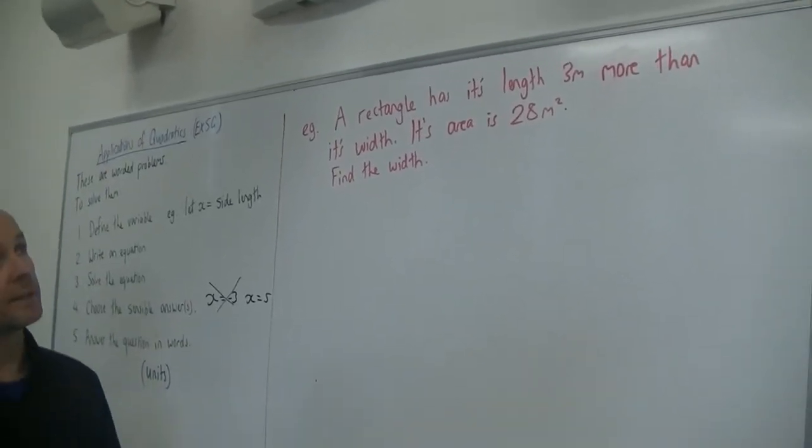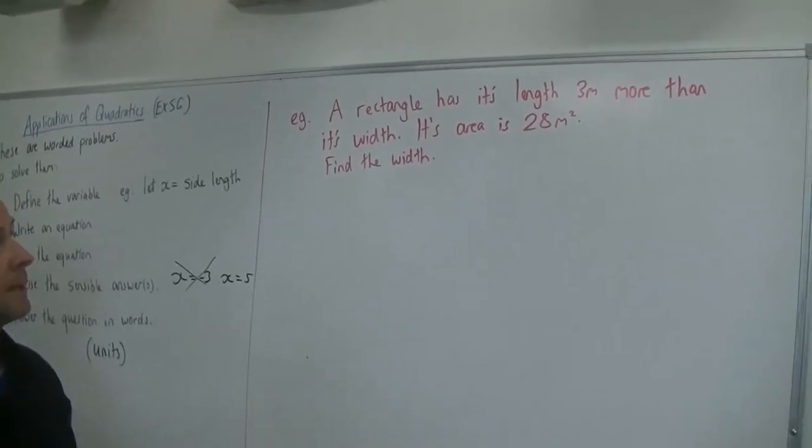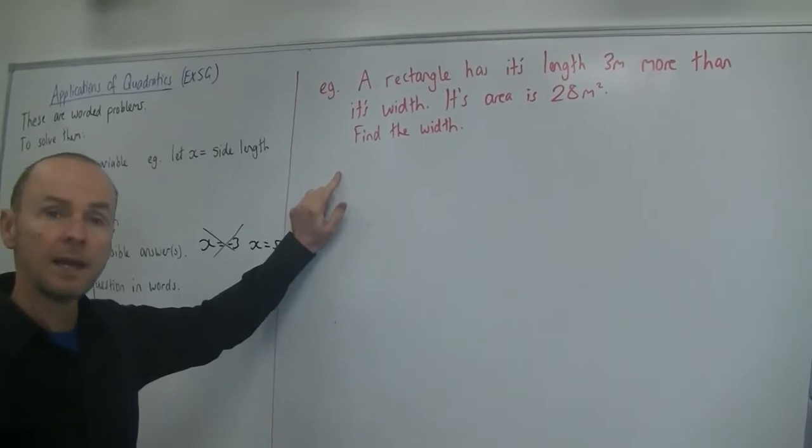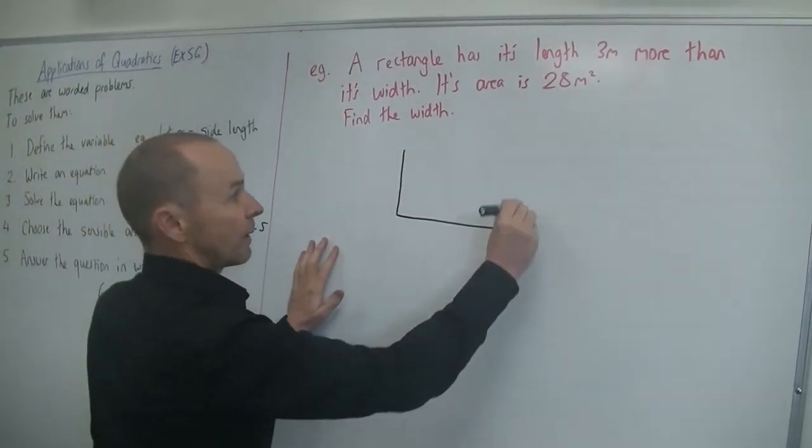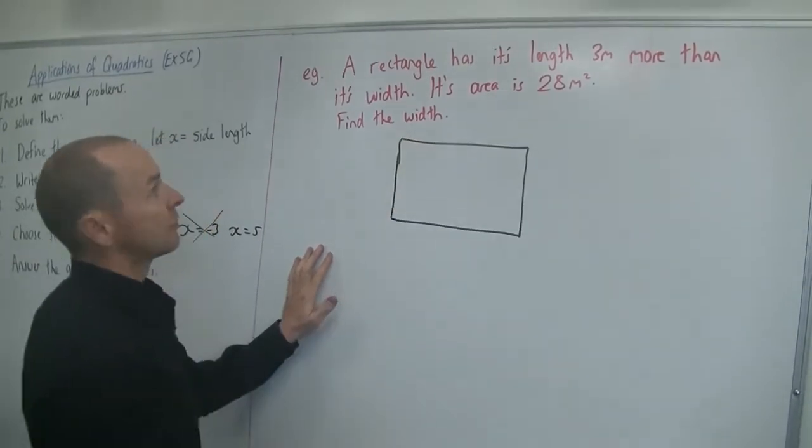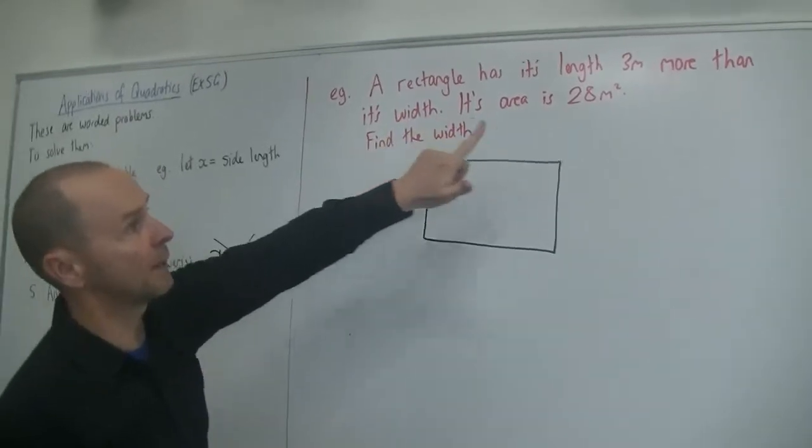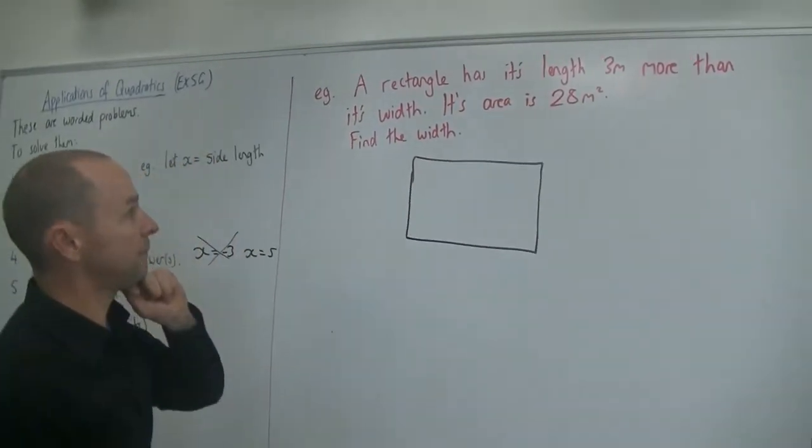A rectangle has its length three metres more than its width. If its area is 28 metres squared, find the width. Okay, so we're going to get a question. If you need to draw a picture, I'm definitely going to draw a nice simple diagram first before I begin. So there's my rectangle and I'm going to read it again because I'm not sure. I've kind of forgotten what it said so I'm going to make sure I've done it right. Its length is three metres more than its width. Okay.